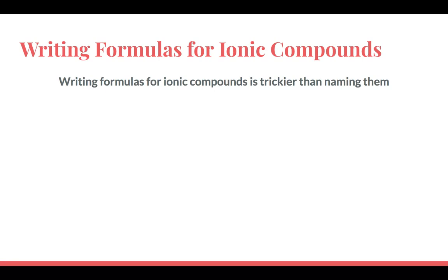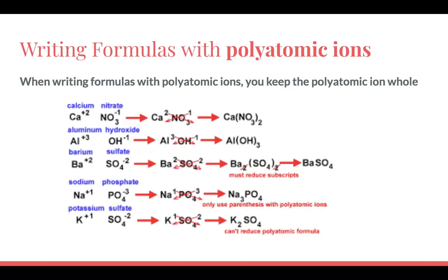Step two, find the charges of those elements. Step three, switch them using the crisscross method. Step four, write them as subscripts. The crisscross method is the same for polyatomic ions, but you have to use parentheses — you have to keep the polyatomic ion whole, which is one of the most difficult parts. It can be helpful to replace a polyatomic ion with the letter X until you finish crisscrossing. You will use parentheses if you need to, to get the smallest possible formula, and you always reduce.